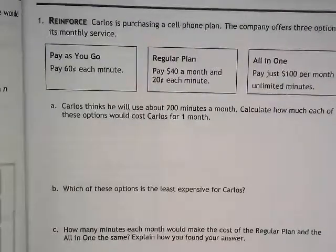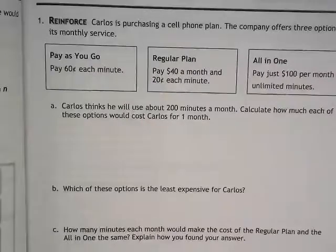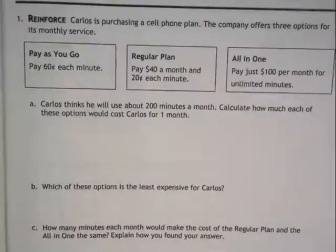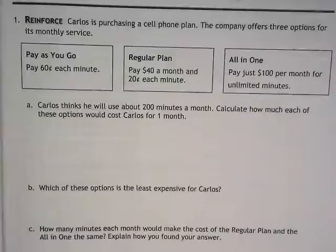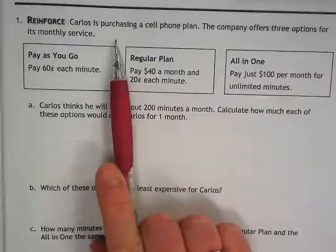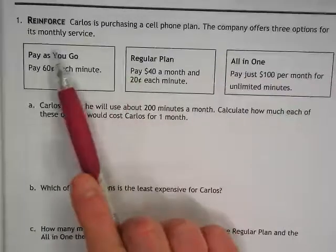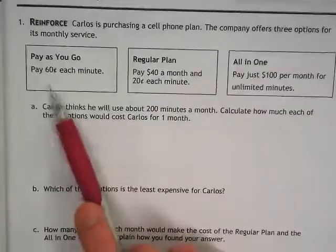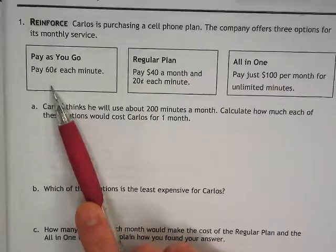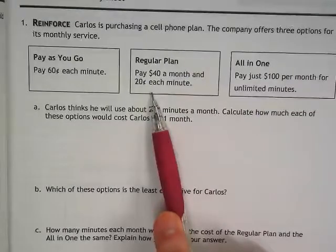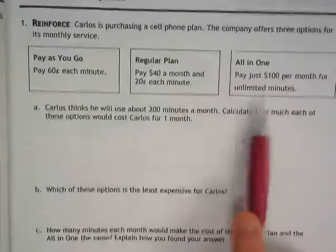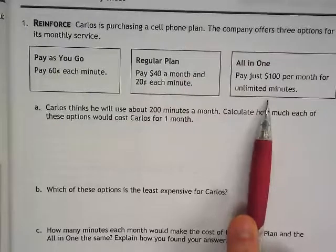Page 93 — we're looking at three different cell phone plans. Carlos is purchasing a cell phone plan and the company offers three options for its monthly service. The first is a pay-as-you-go where you pay 60 cents for every minute. The second is you pay $40 a month and then 20 cents per minute. And finally, pay just $100 a month for unlimited minutes.